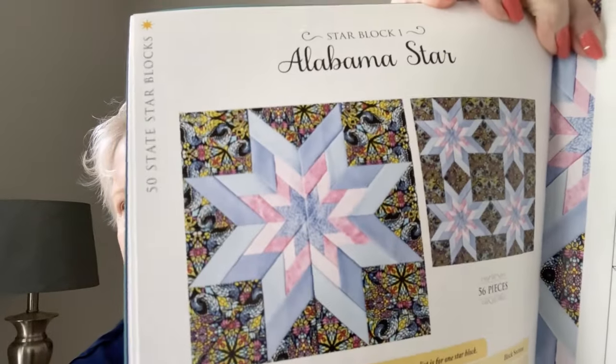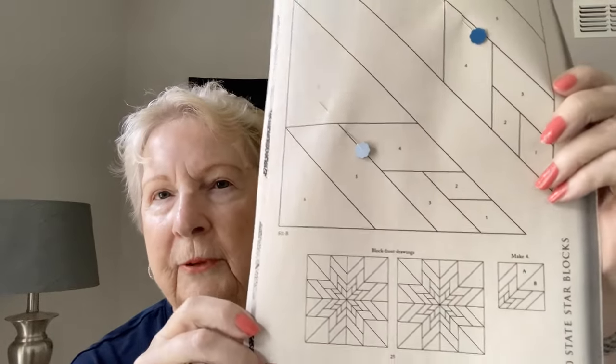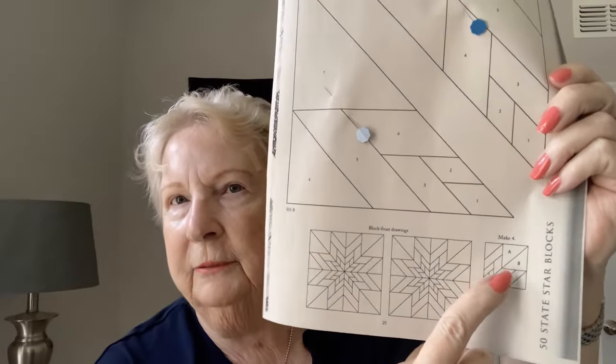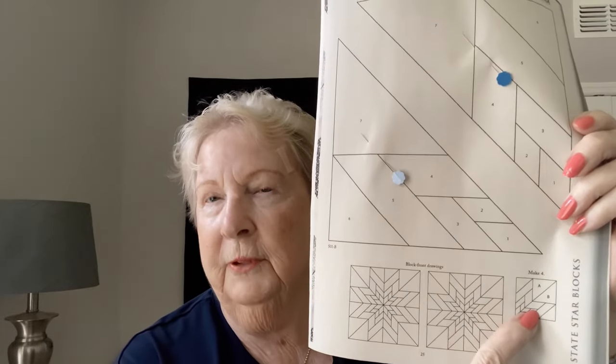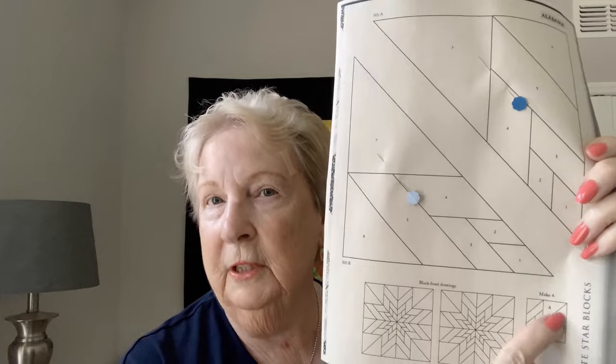I'm going to use the Alabama block in the book as my first example of how I went about choosing fabrics. I printed out the foundation, and you want to have the book or the foundation in front of you so you can look at the block front drawing right down here. It's actually what the finished block would look like for a quarter of the block — a finished image of the foundation.